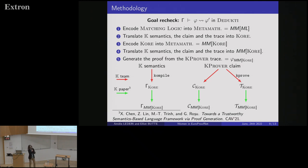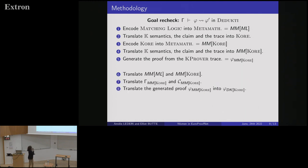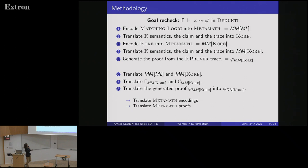To remind you, we need to translate Kprover proofs into Dedukti. The first step — encoding matching logic into MetaMath — is already done by the K-team. I need to do the further step of translating this MetaMath encoding into Dedukti. So I need to translate the encoding of matching logic, core, the semantics, the claim, and the trace into Dedukti. Generally, this means translating MetaMath encodings and MetaMath proofs, so more generally we need a translator from MetaMath to Dedukti.